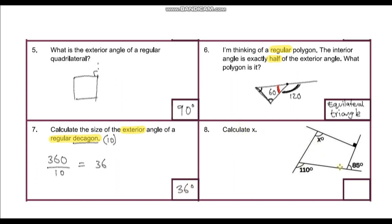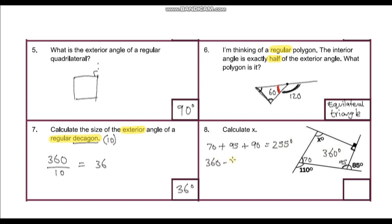Question eight: calculate x. We have a quadrilateral, so the sum of interior angles is 360 degrees. One angle is an exterior angle of 110 degrees, so its interior angle is 180 minus 110 = 70 degrees. Another exterior angle is 85 degrees, giving interior angle 180 minus 85 = 95 degrees. There's also a right angle, so 90 degrees. Adding these: 70 plus 95 plus 90 equals 255 degrees.